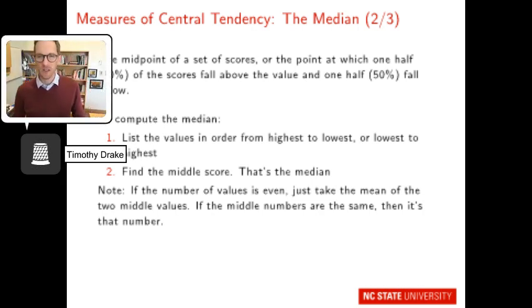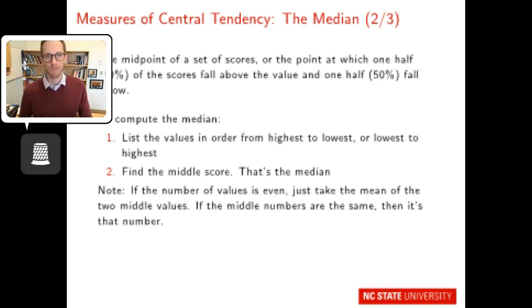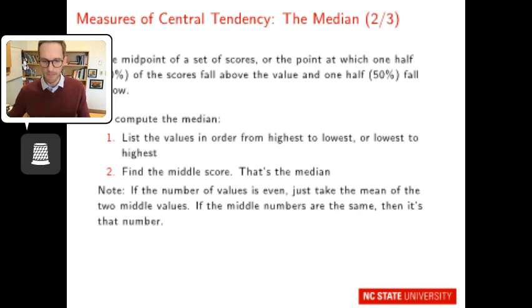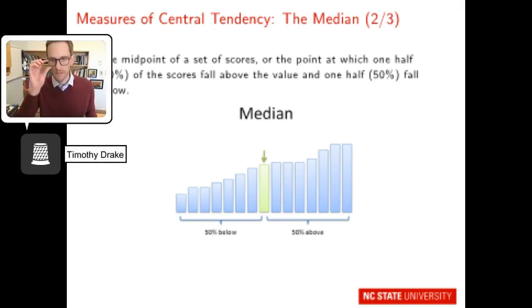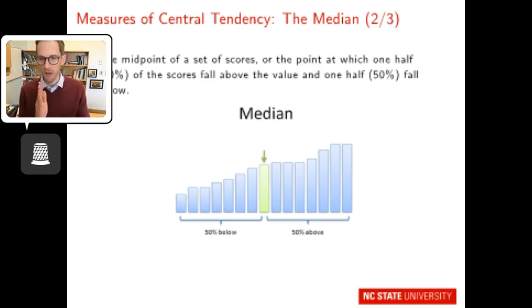The second measure of central tendency is the median — the midpoint of a set of scores, or the point at which one half of the scores fall above and one half fall below. To find it, order all values from high to low, then find the middle score. If the count is even, take the mean of the two middle values. If the middle numbers are the same, that value is the median.